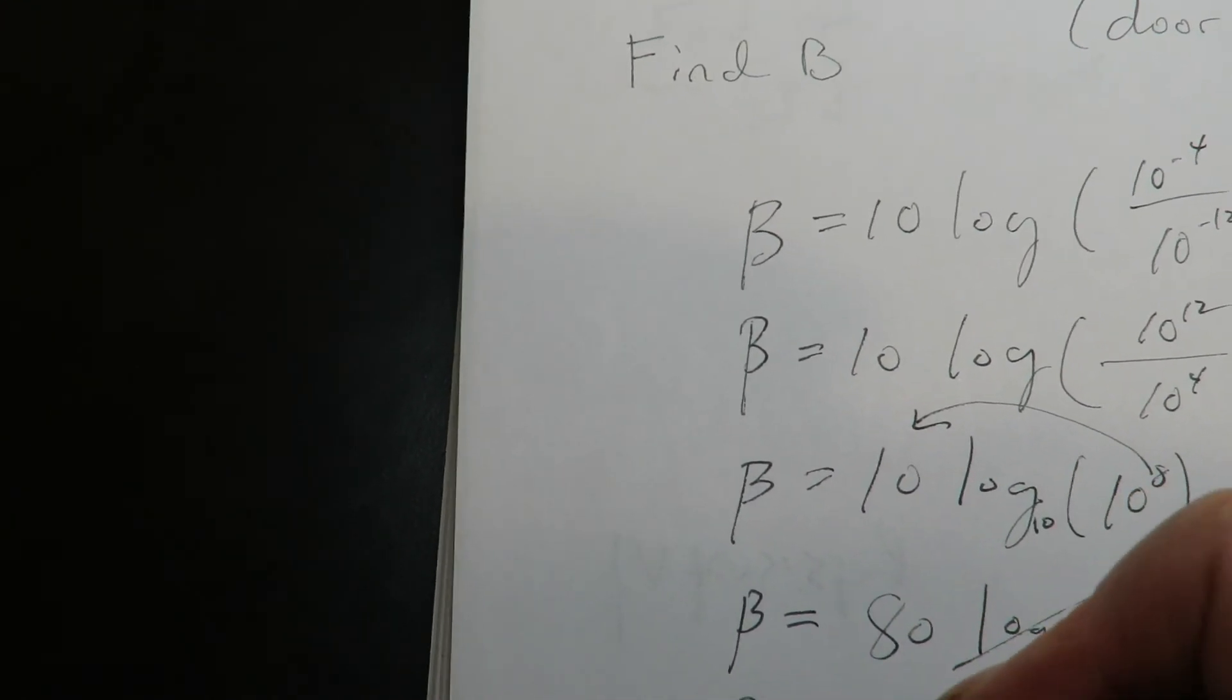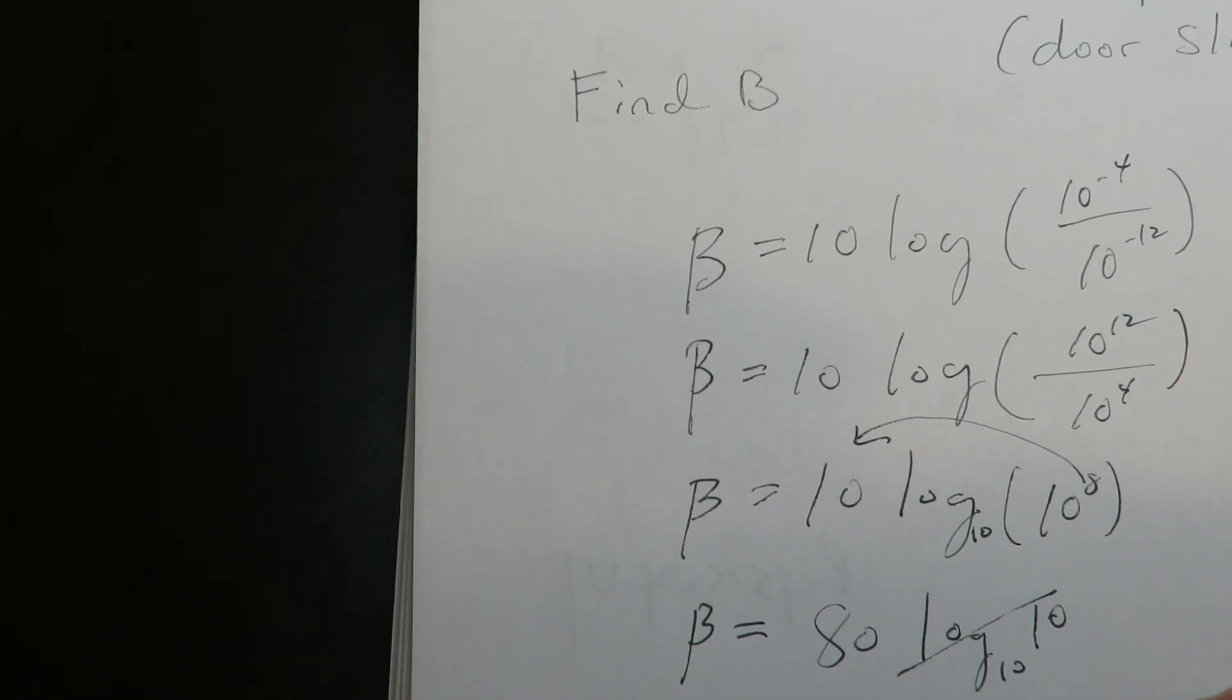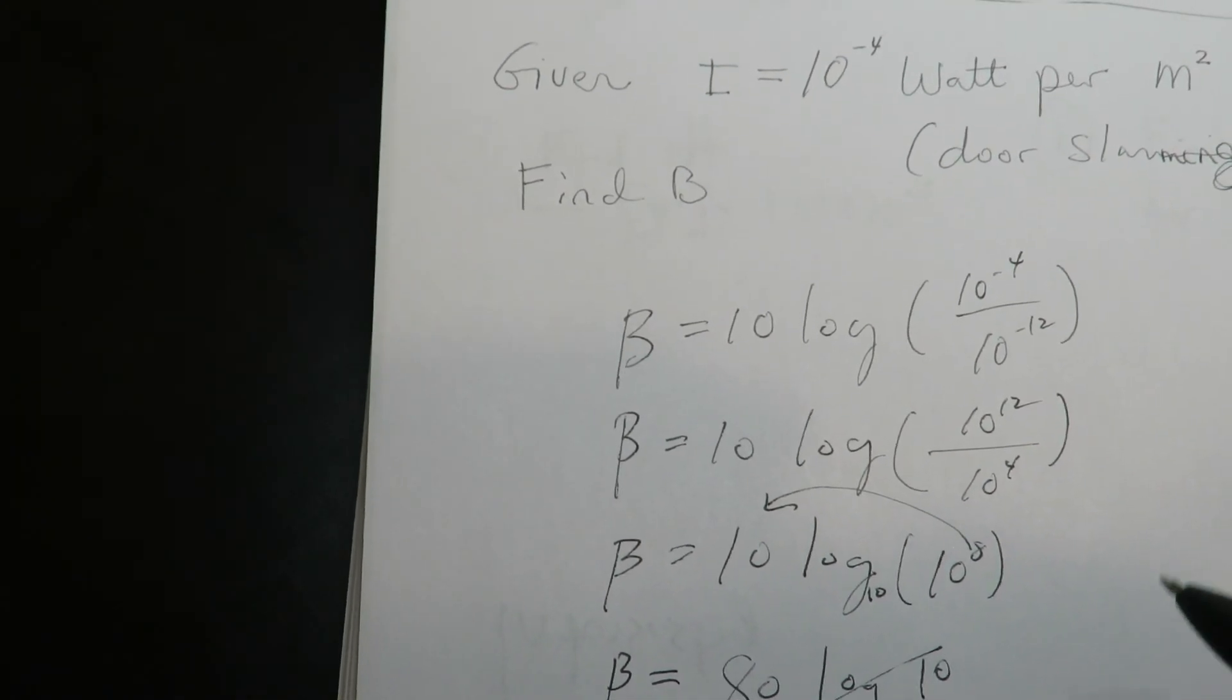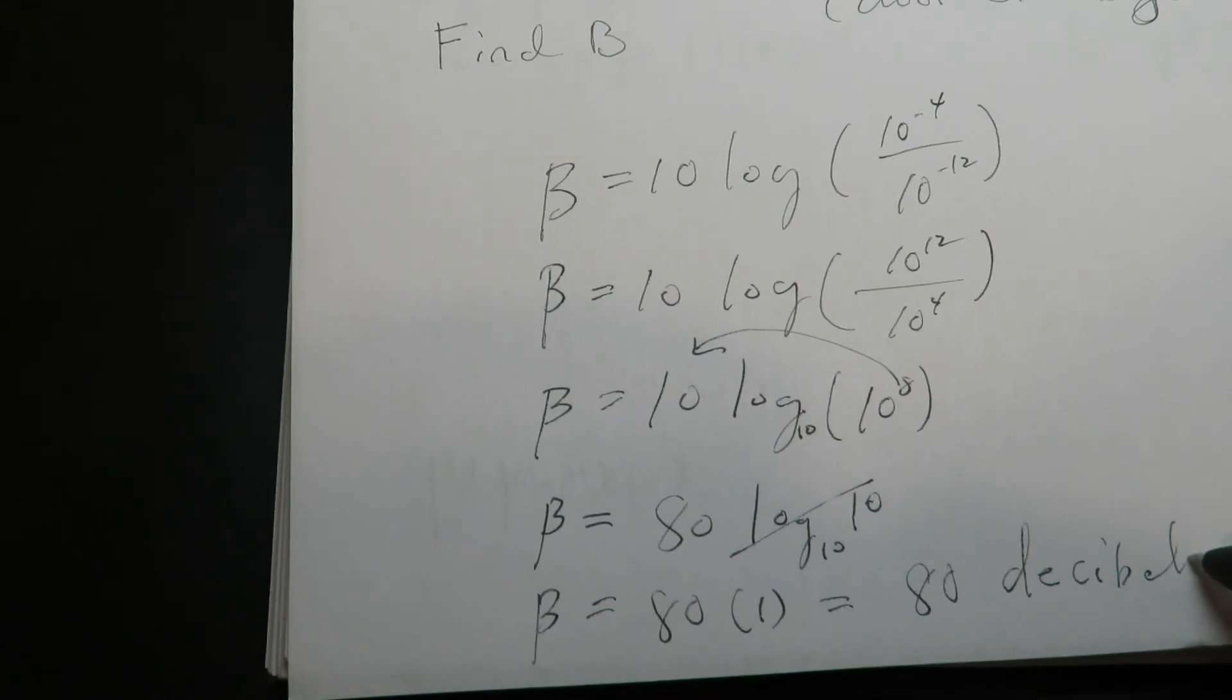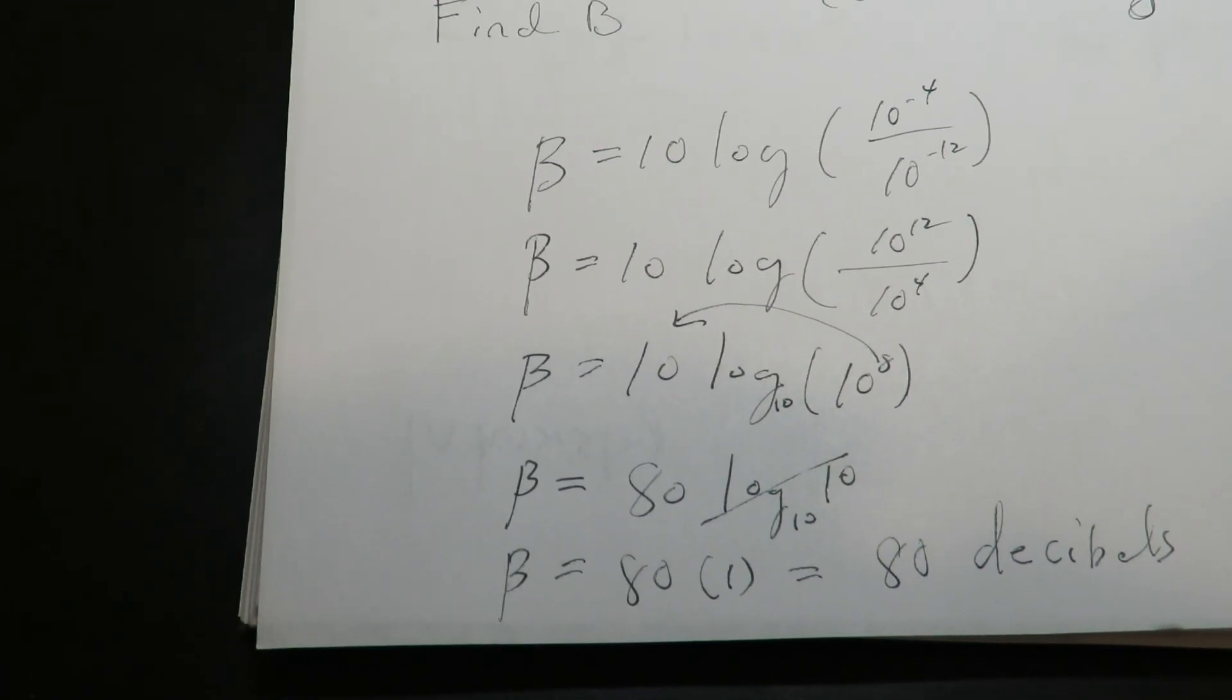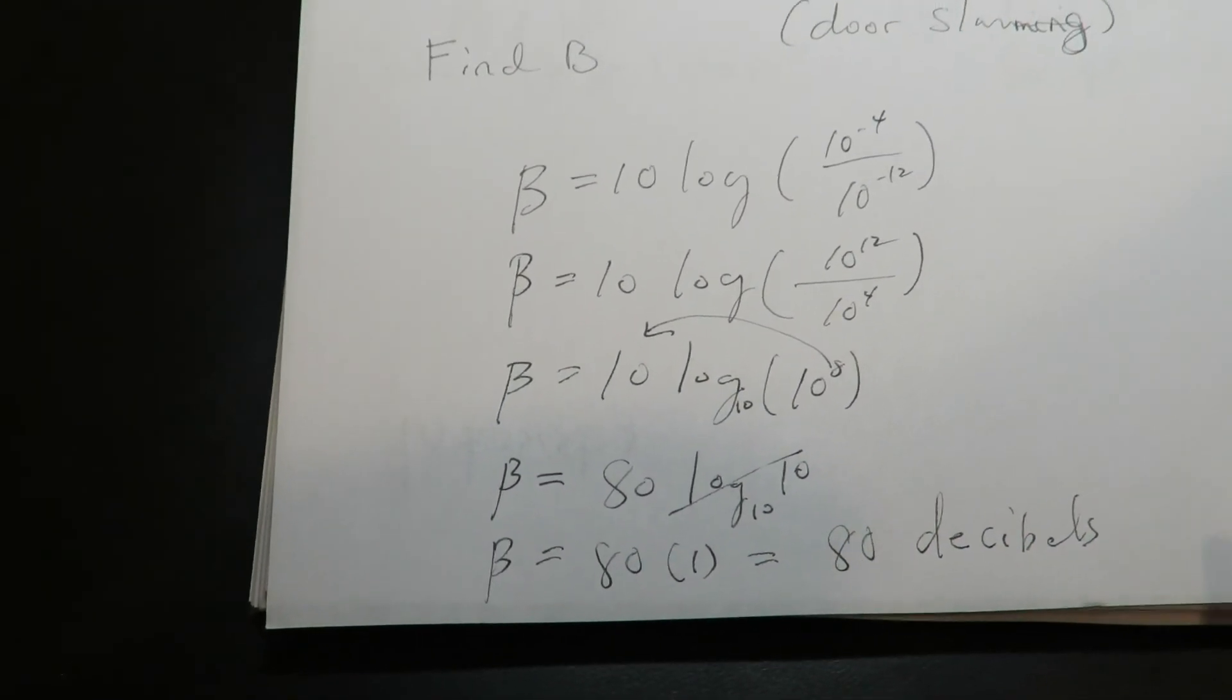So this is 80 times 1, or just simply 80. And this is in decibels. So a door slamming would be 80 decibels.